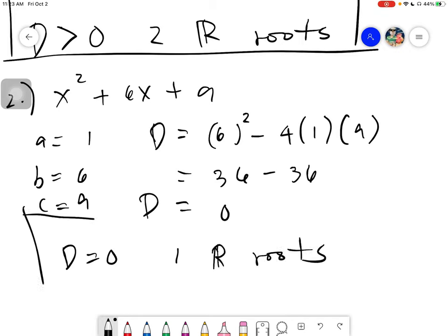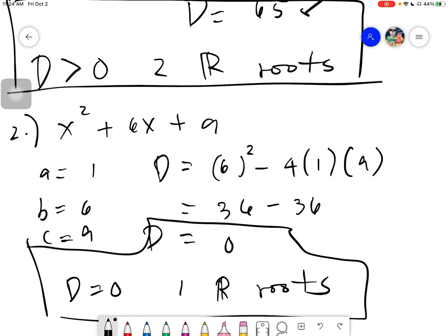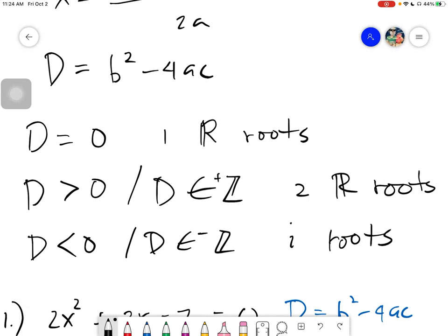then we can say that you will have 1 real root. So basically, this is our answer. So very easy, the discriminant and the nature of roots. You just have to determine the discriminant, of course, then determine the relationship. And of course, there are only three relationships, which is this one. I do hope you got that topic. Thank you, everyone, for listening. And Assalamualaikum warahmatullahi wabarakatuh.